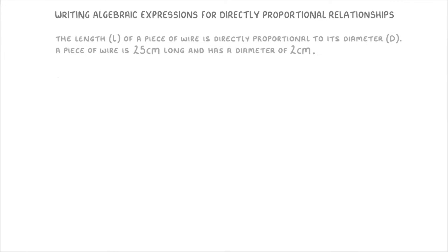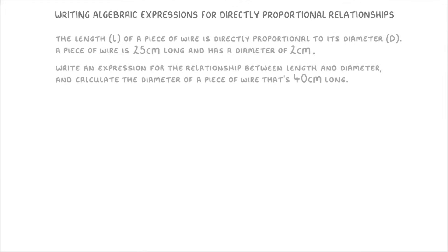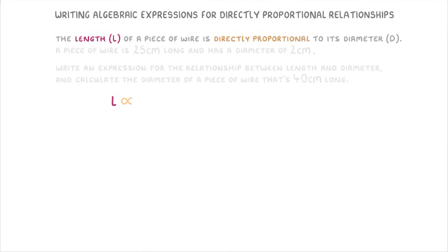Let's have a go at one more. The length of a piece of wire is directly proportional to its diameter. A piece of wire that's 25cm long has a diameter of 2cm. Write an expression for the relationship between length and diameter, and calculate the diameter of a piece of wire that's 40cm long. So from this first part, we know that length is directly proportional to diameter, so L is proportional to D. Then if we add our constant of proportionality, we get L equals KD.